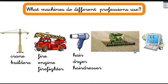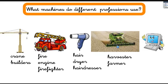Look at this huge machine in the countryside. This is wheat, and this machine helps cut the plant and store the grain. It's used by the farmer — it's a harvester. And look at this machine: you use it every week — it's a computer. Teachers and office workers use this machine every day.